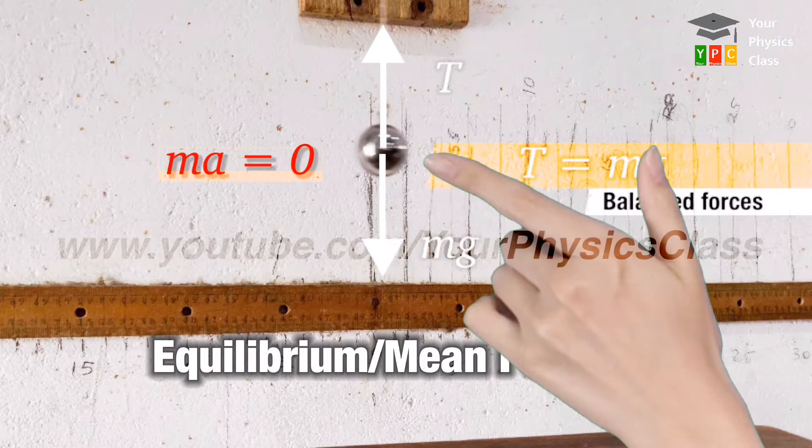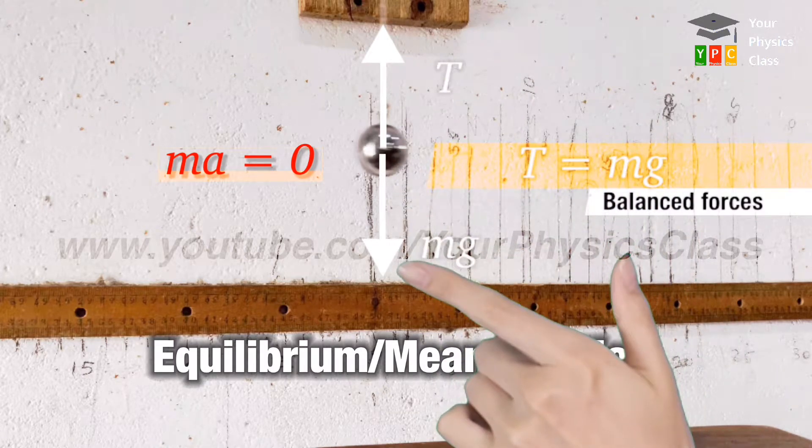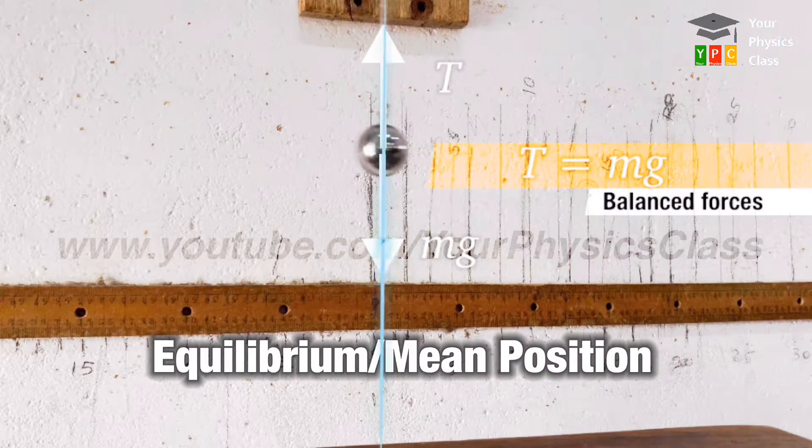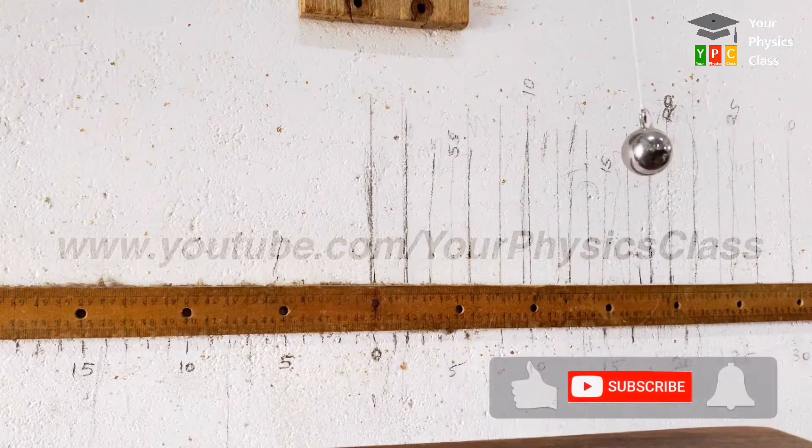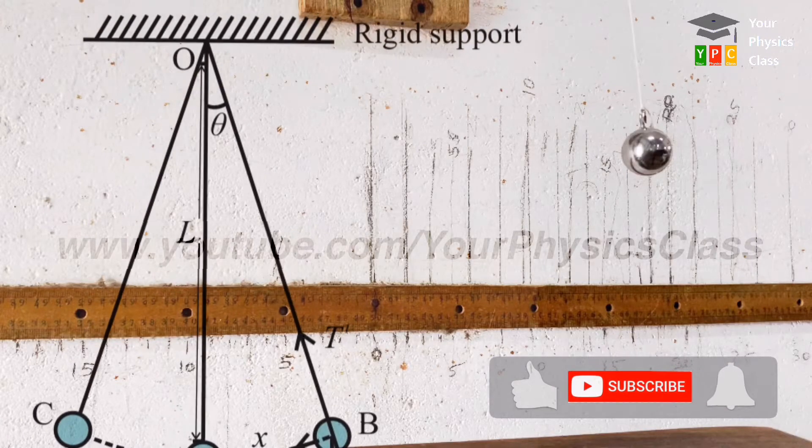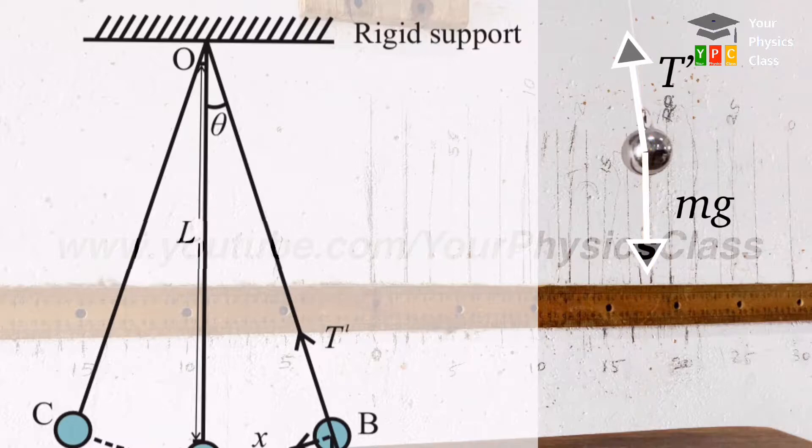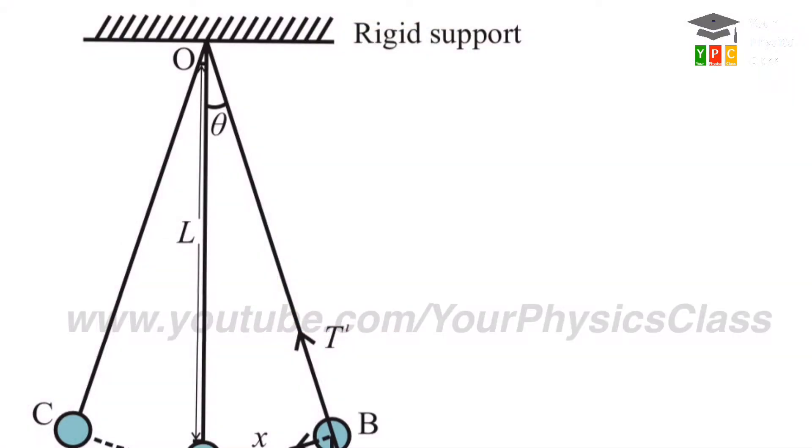At this position, tension in the string and weight of the bob are collinear vectors. If the bob is displaced from its mean position by some angular displacement, then weight and tension would no longer be collinear. Therefore, we have to resolve weight mg into its rectangular components.